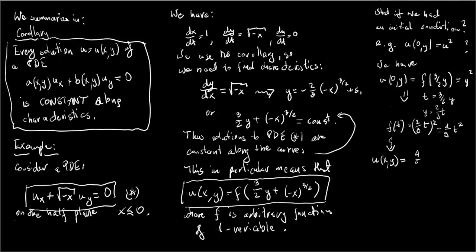That's from all F's which give a general solution to our PDE, our initial condition picks up F such that F applied on a variable is just 4/9 of this variable squared. So if we just take 4/9 of (3/2 y plus minus x)^(3/2) and everything squared, then we obtain the particular solution to our PDE satisfying our initial conditions.